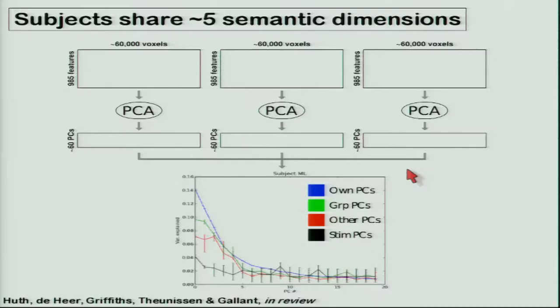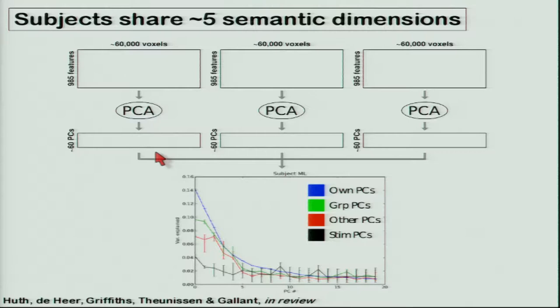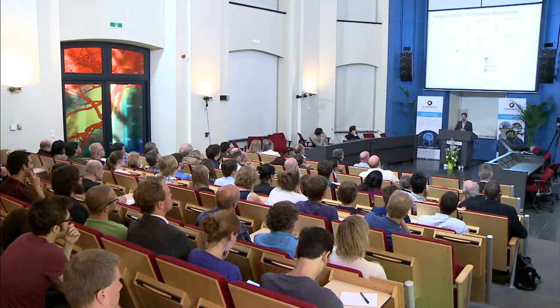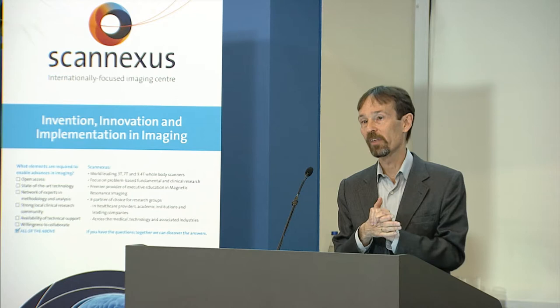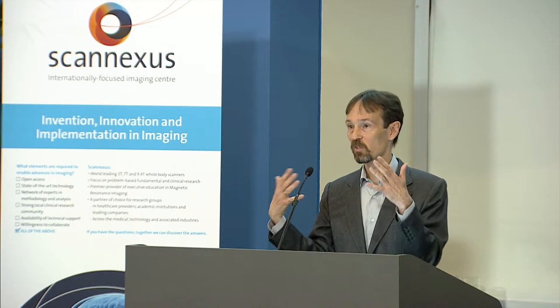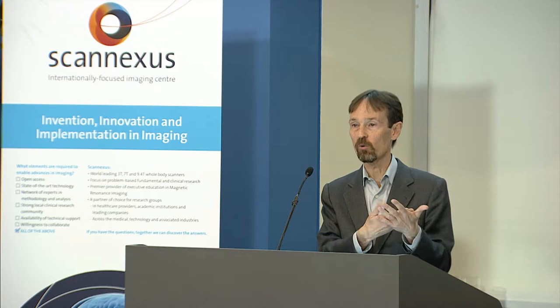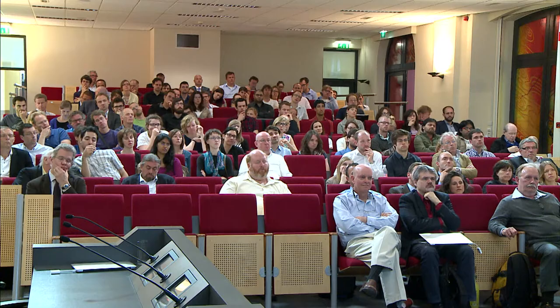When you do these kinds of experiments, you have way too much data. With five to seven subjects, each subject has 60,000 to 100,000 voxels and we have 985 features, so we need dimensionality reduction. The first thing you think about is principal components analysis. PCA reveals it takes around 80 principal components to account for about 95% of variance in an individual subject's data. You can then compare principal component solutions across subjects, since those are just vector spaces. When you do this, you find all subjects share a low five- or six-dimensional semantic space describing how the semantic model is distributed across the brain.